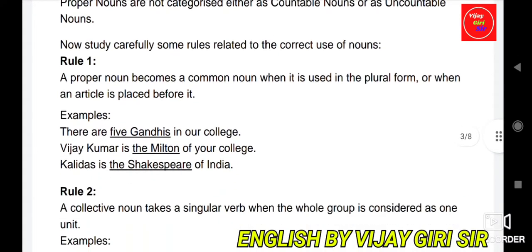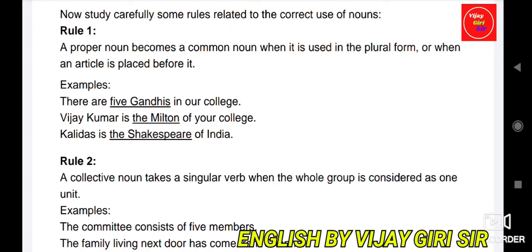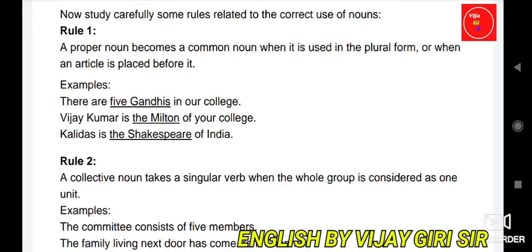Now study some rules related to the correct use of nouns. Rule 1: A proper noun becomes a common noun when it is used in the plural form or when an article is placed before it. For example, 'There are five Gandhis in our college.'